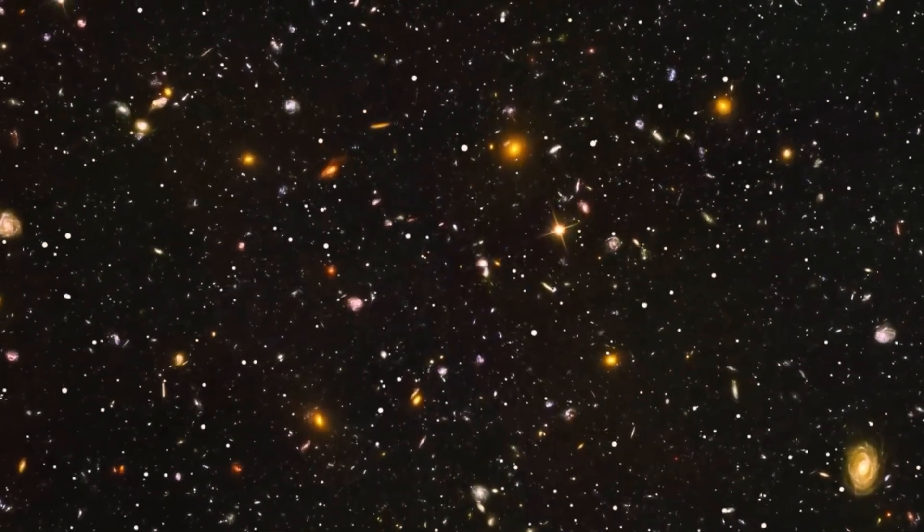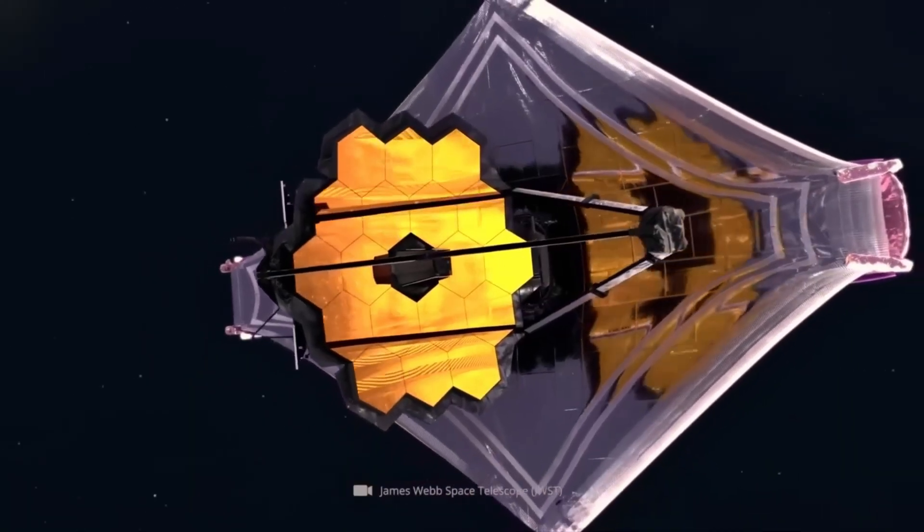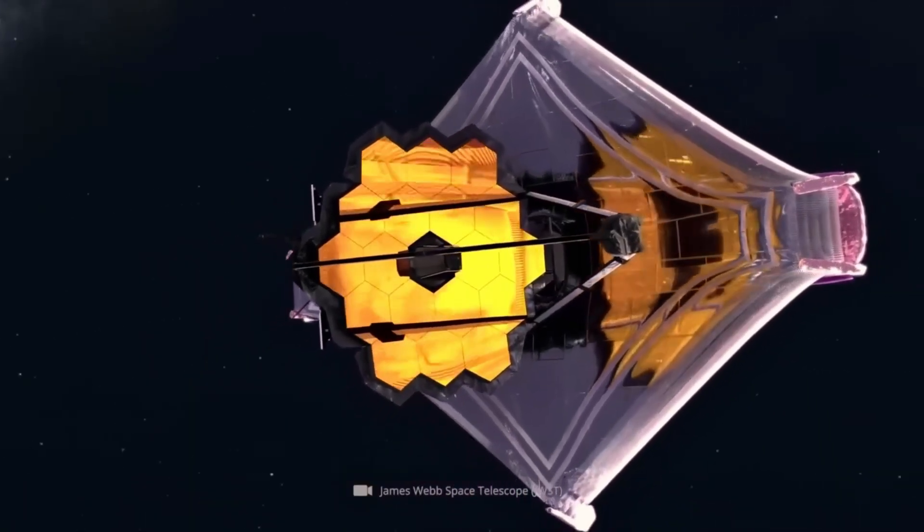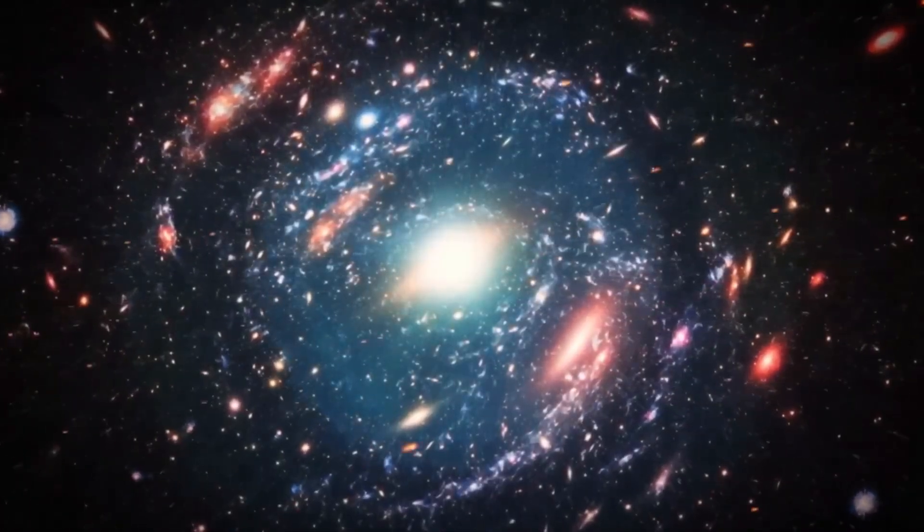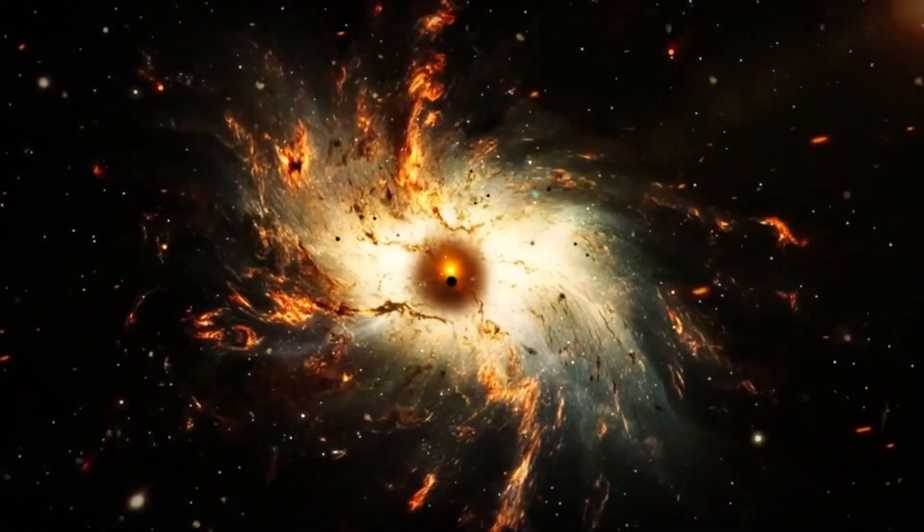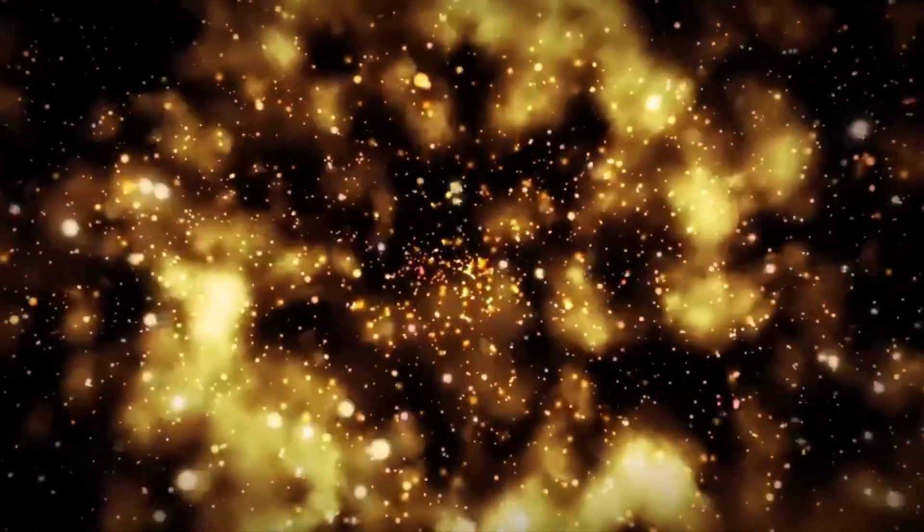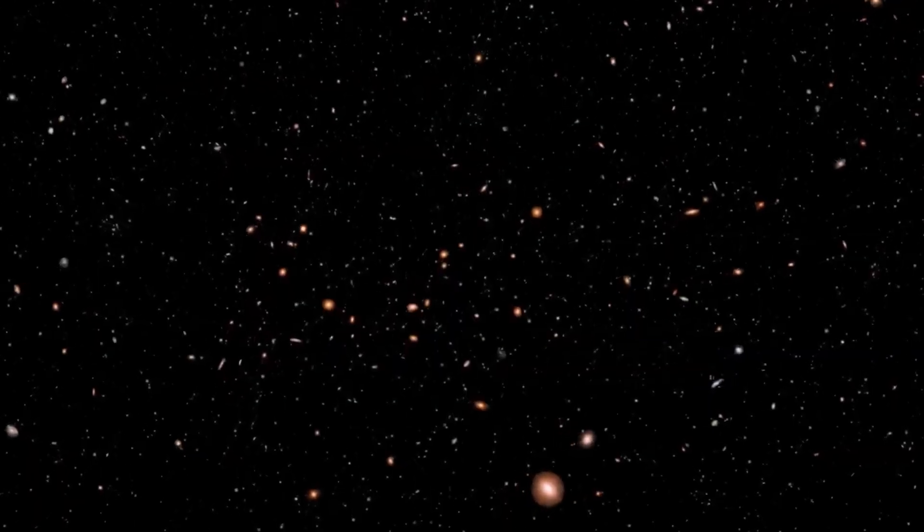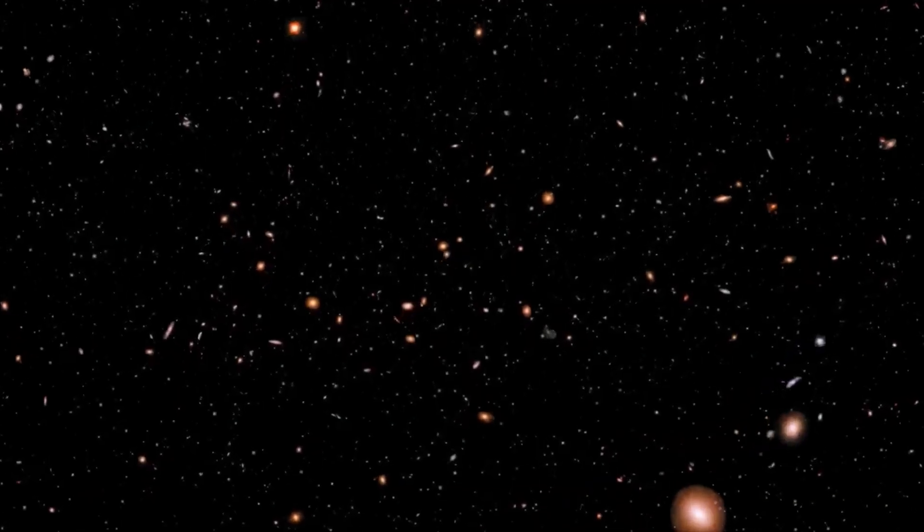But how can we test something so immense? That's where Webb's next phase comes in. Its instruments can detect subtle distortions in infrared light caused by gravitational lensing, the bending of space by mass. If these distortions show consistent circular patterns beyond statistical randomness, it could support the idea that the current universe's structure is a continuation of a previous one.